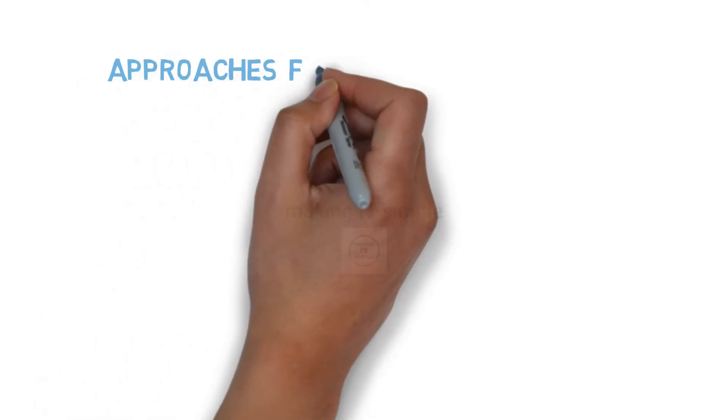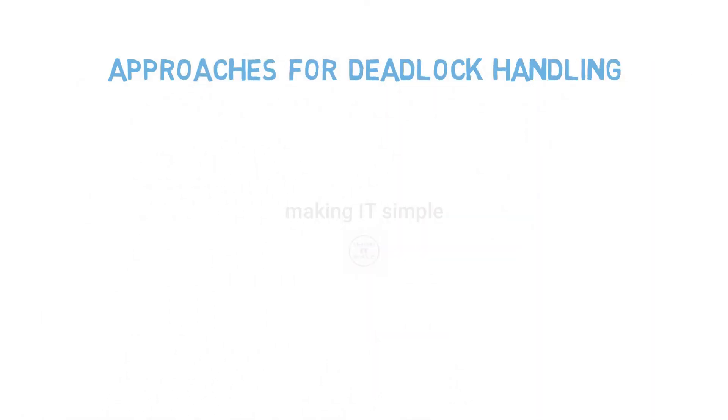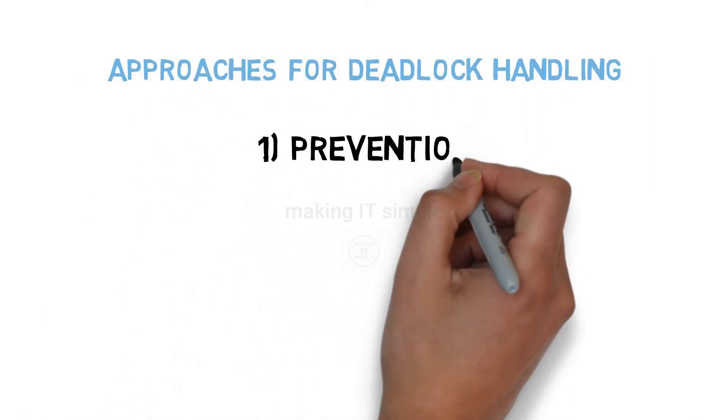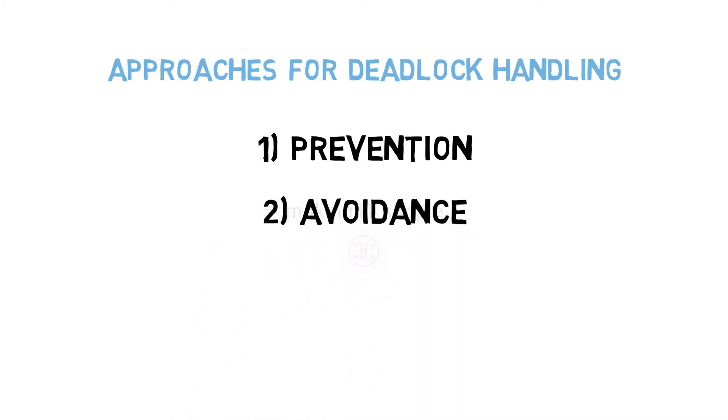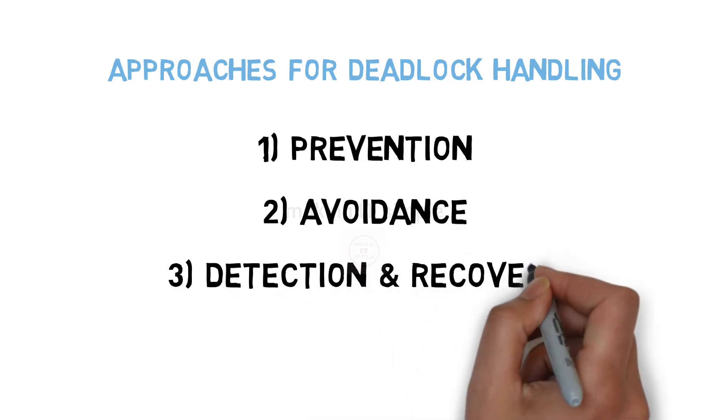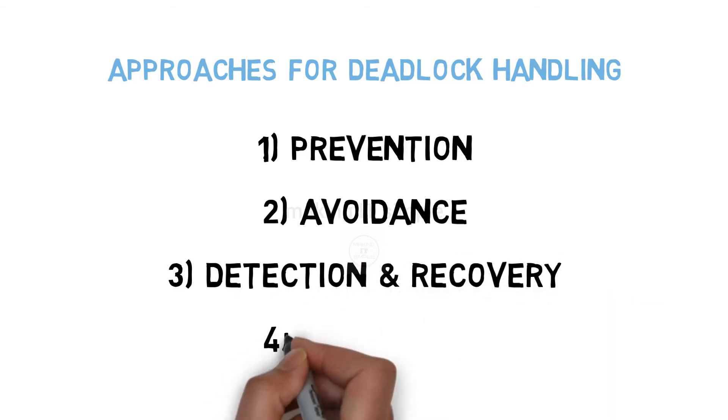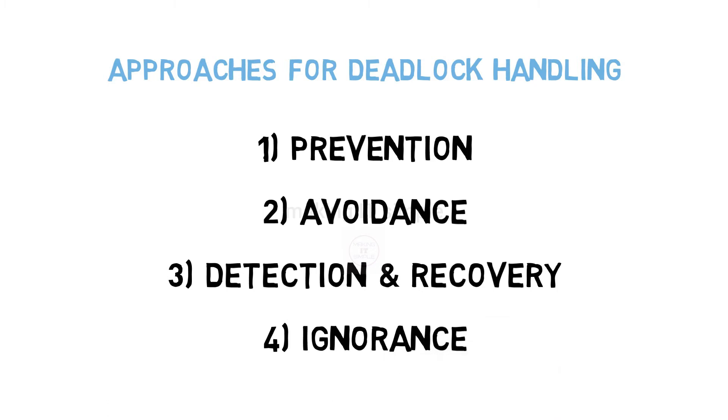Following are four approaches for deadlock handling. First approach is prevention. Second one is avoidance. Third approach is detection and recovery. And the fourth and last one is ignorance. I will explain the basic idea of all four approaches using real life examples. We will see the detailed explanation and algorithms used in upcoming videos.